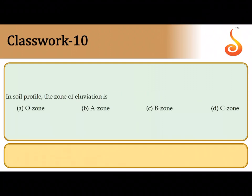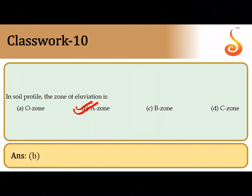In the soil profile, the zone of alluviation refers to the area where minerals get leached — carried away to the bottom layers of the soil. The question asks in which zone minerals undergo leaching to the maximum extent. It is the A zone, which represents the fertile topsoil layer. So the correct answer is option B, the A zone.